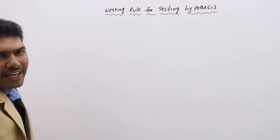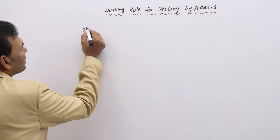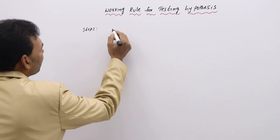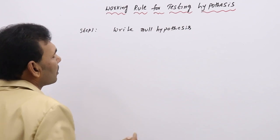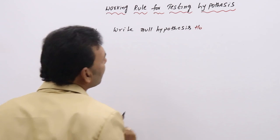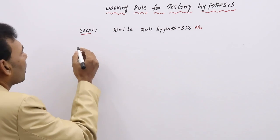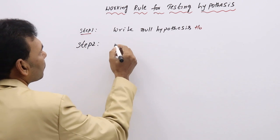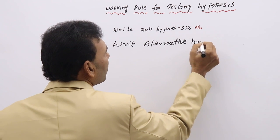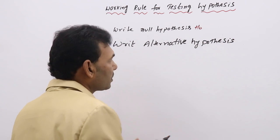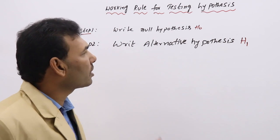Working rule for testing hypothesis. If you want to test a hypothesis, what is the general procedure? Step 1 is to write the null hypothesis H0 — a hypothesis of no difference. Step 2 is to write the alternative hypothesis H1. Alternative hypothesis means simply the opposite of what you write in H0. If you say equal to in H0, here you write not equal to, sometimes less than or greater than.